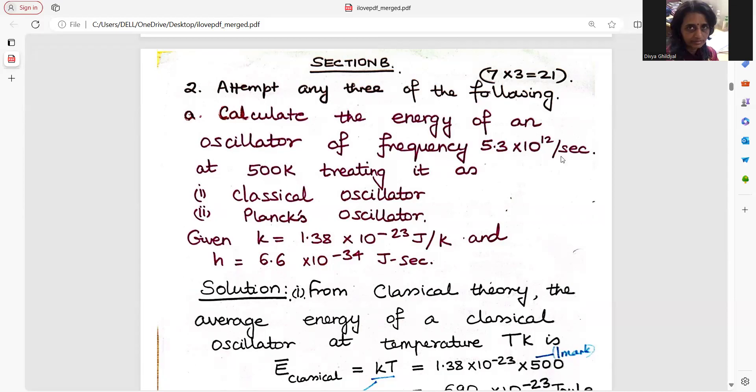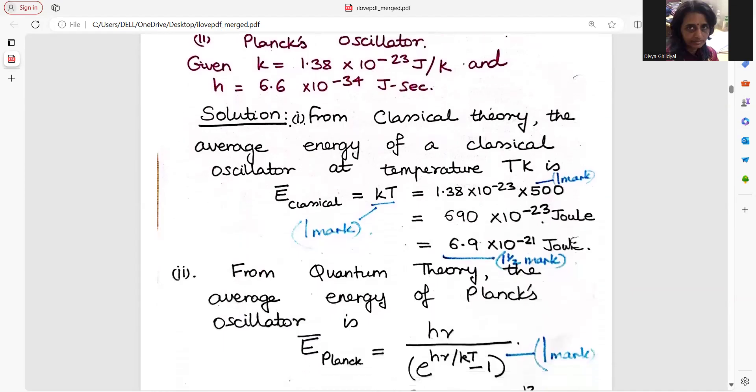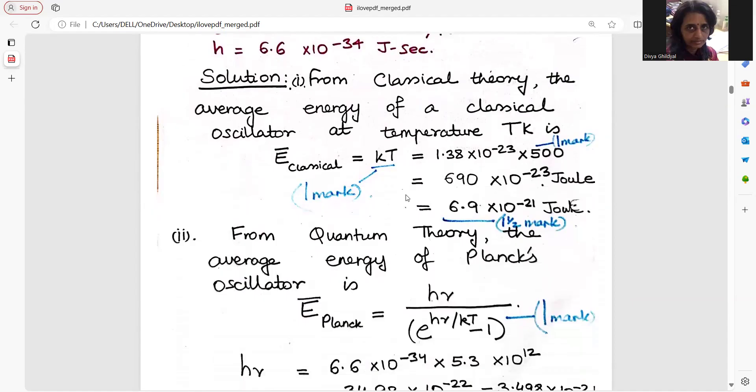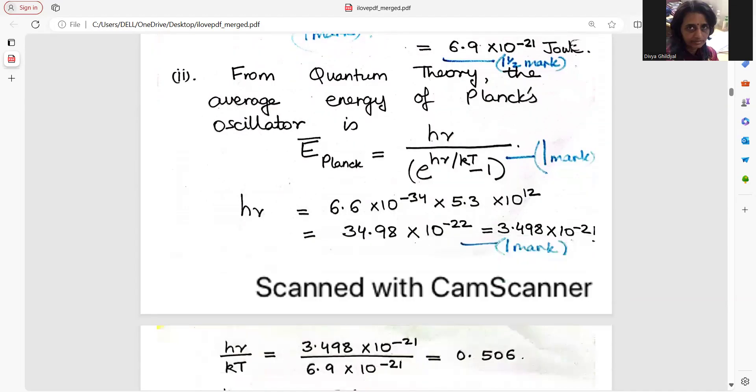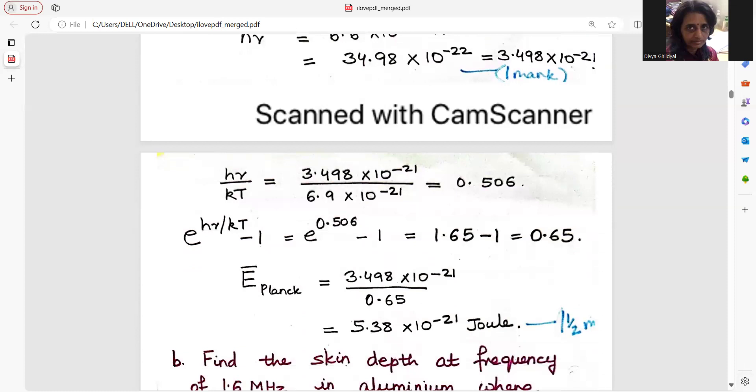The energy of an oscillator which frequency has been given at temperature. This is Planck's oscillator numerical. From classical theory, two parts are there, three and a half here, three and a half here. Classical says Boltzmann constant into temperature, leave it in Joules. Quantum says h nu upon e to the power of h nu by kT minus one. You find the values independently here. h nu and kT divide, find the power of e to the power and you get the answer. Since this explanation is a bit lengthier one, maybe four and three also, they can differentiate it this way.